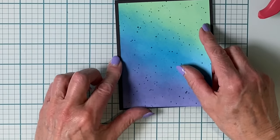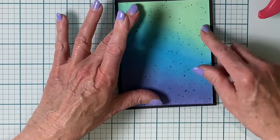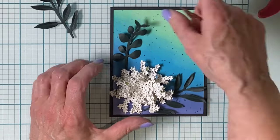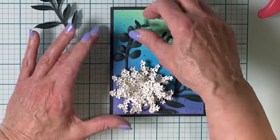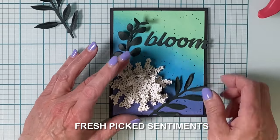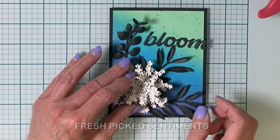The panel was trimmed down to four by five and a quarter inches, and then adhered to an A2 size black top folding card base. And again, I'm just checking out the layout, but this time with the sentiment, which is from Fresh Picked Sentiments.